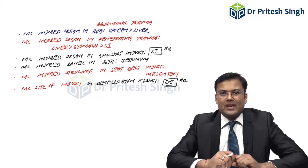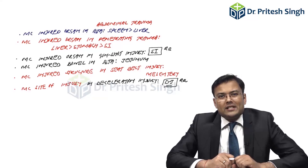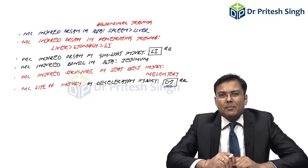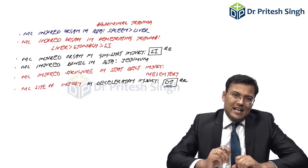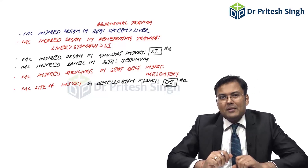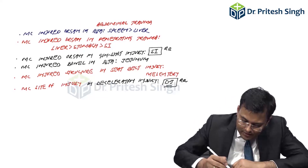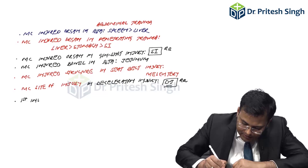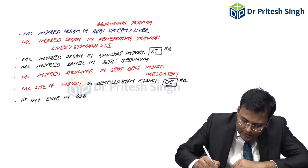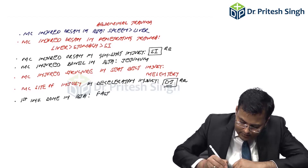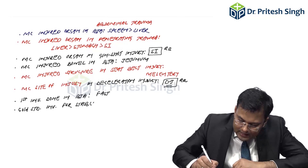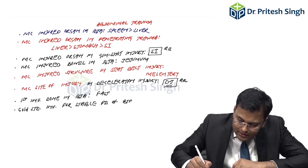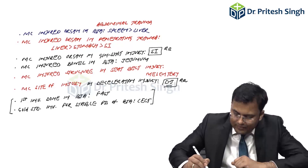Two to three questions are asked regarding investigations in blunt trauma abdomen. What is the first investigation done in patients of blunt trauma abdomen? Regardless of whether the patient is stable or unstable, the first investigation performed is FAST. The gold standard investigation for stable patients of blunt trauma abdomen is CCT.